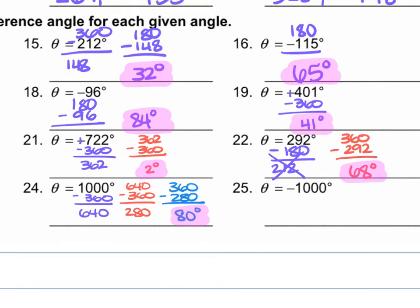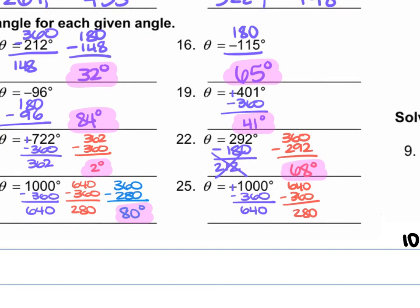For number 25, it's negative 1,000, so we do the same as with positive 1,000. Turn it into a positive, subtract 360 to get 640, subtract 360 again to get 280, then subtract 280 from 360 to get 80 degrees.